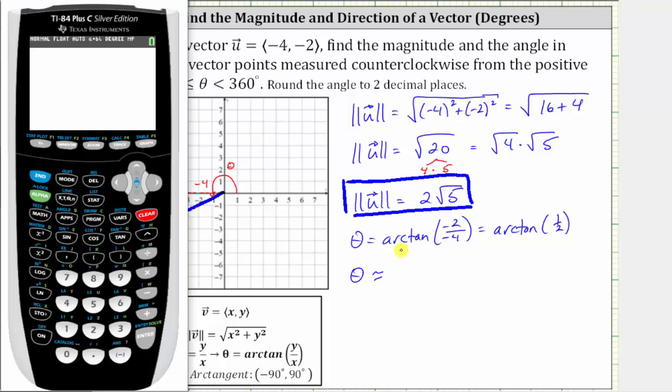We need to verify that we are in degree mode, so we press the mode key. Notice we are in degree mode. We go back to the home screen and enter second tangent for arc tangent, one divided by two, close parenthesis, and enter.